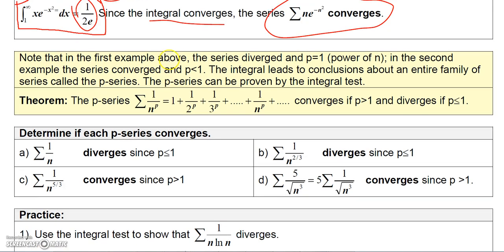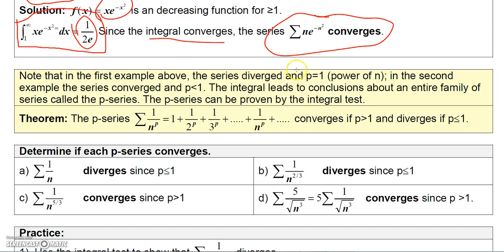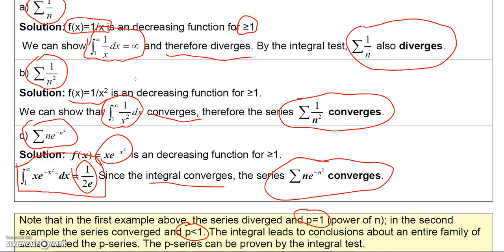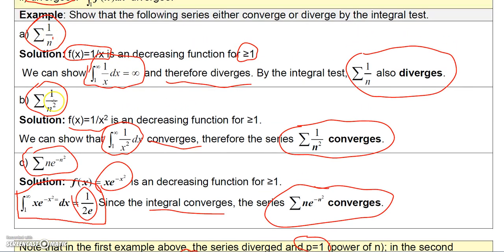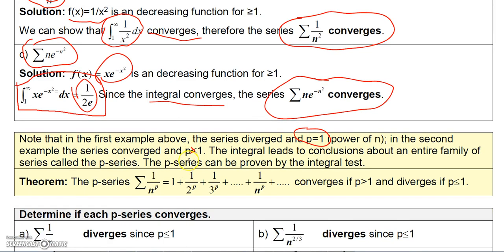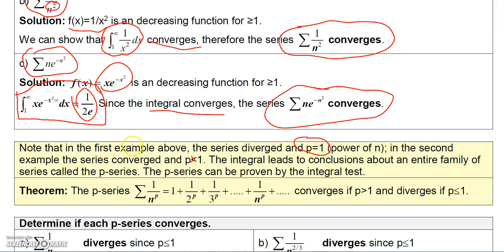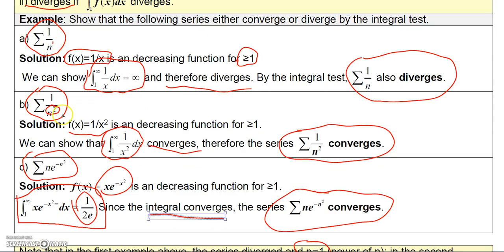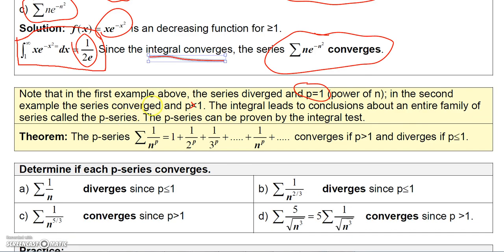Note that in the first example the series diverged and the power of n was 1, but in the second example the series converged and the power of n was 2. I actually misspoke — I said the power was less than 1, but actually in the second example the power is greater than 1. That's important. So in 1/n the power equals 1, and in 1/n² the power is greater than 1.